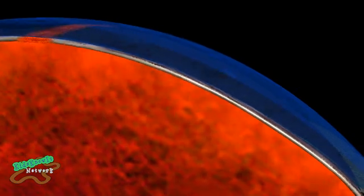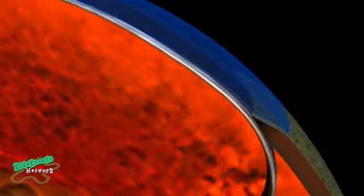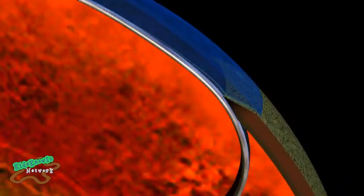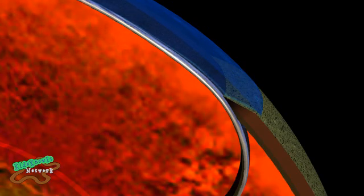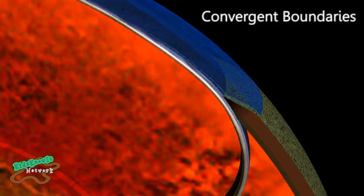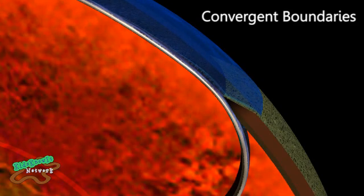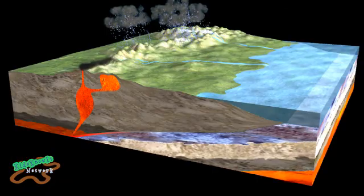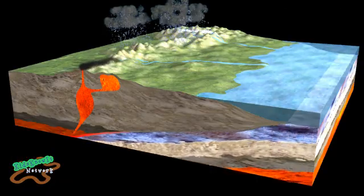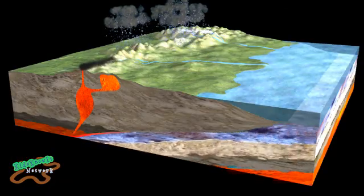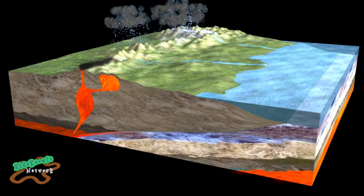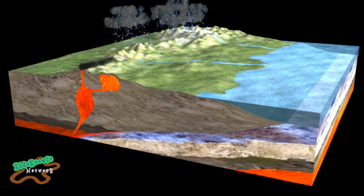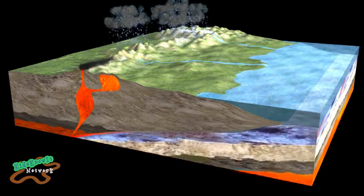As those plates pull apart, on the opposite sides of them, they crash into continental crust, which is less dense and thus more buoyant, causing the oceanic crust to dive under. This is known as a convergent boundary or a subduction zone. Oceanic crust dives back into the mantle where the rock eventually melts. Some of this will rise through the crust and form volcanoes.